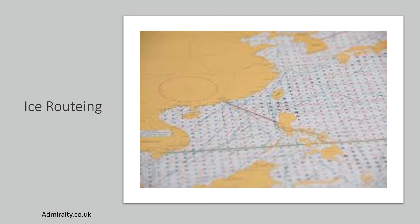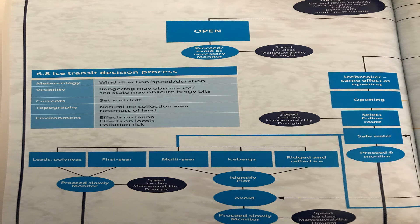With this, we go into the ice transit decision process. At all times, the mariner should enter ice only if necessary, selecting open water routes if at all possible. Operating a vessel within ice-infested waters requires consideration of additional factors in a continual feedback decision-making process, the same as any other passage plan. The primary additional factor is, of course, the ice and weather conditions — whether open with relatively little ice, or close. I will talk about what close ice or open ice means very shortly.